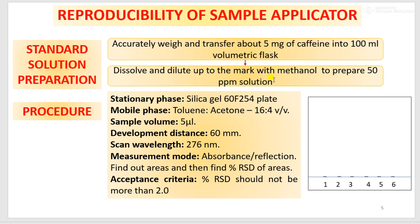This sample you have to apply with the help of applicator on HPTLC plate. The chromatographic conditions are: stationary phase is silica gel 60F254 plate; mobile phase is toluene:acetone in the ratio of 16:4; the sample volume applied will be 5 µL; the development distance will be 60 mm; scan wavelength will be 276 nm; and measurement mode will be absorbance reflection.